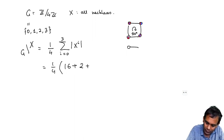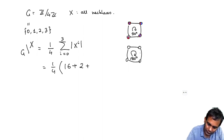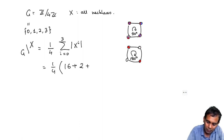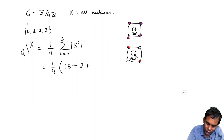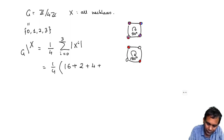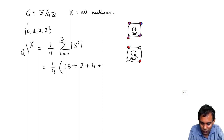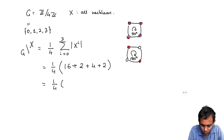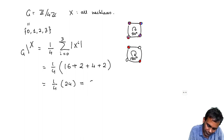For i = 2, rotation by 180 degrees: this bead and the bead opposite to it must be the same color, and similarly the other pair of opposite beads must match, but the two pairs can be colored independently. So I get 2 × 2 = 4 choices. For i = 3, counterclockwise rotation by 90 degrees, it is just like rotation by 90 degrees, so again we get 2. The total is (1/4)(16 + 2 + 4 + 2) = (1/4)(24) = 6. So there are 6 different necklaces with 4 beads and 2 colors.